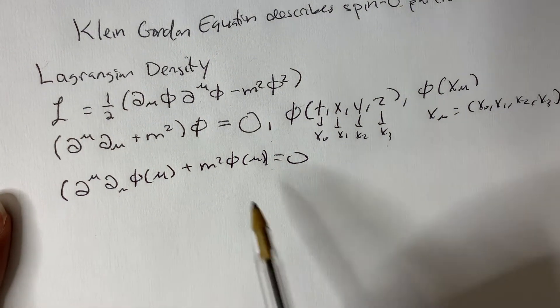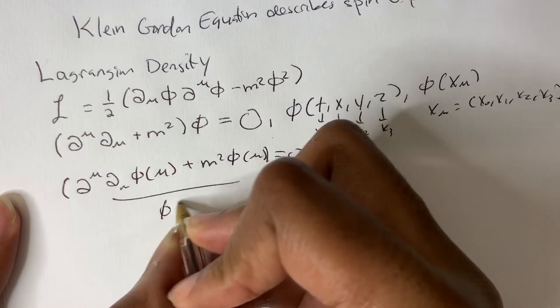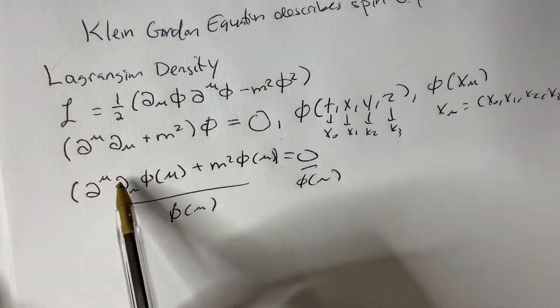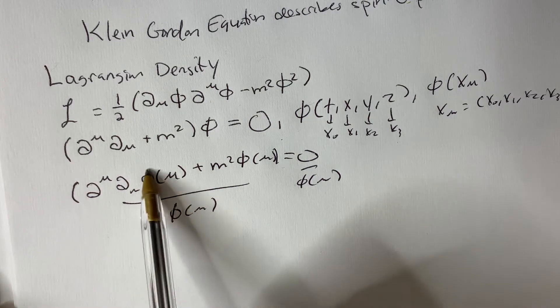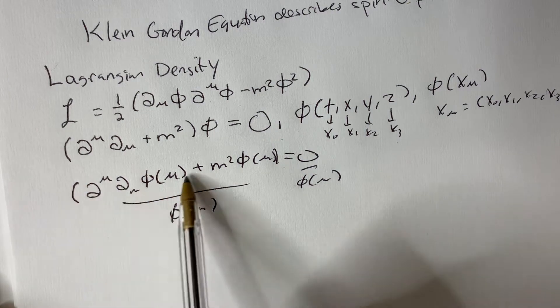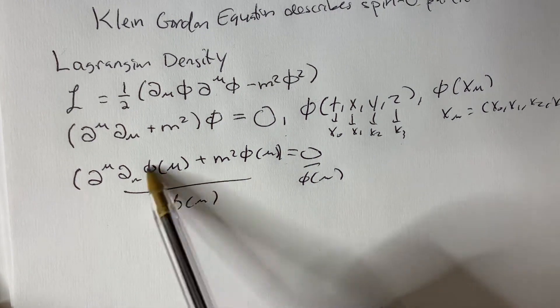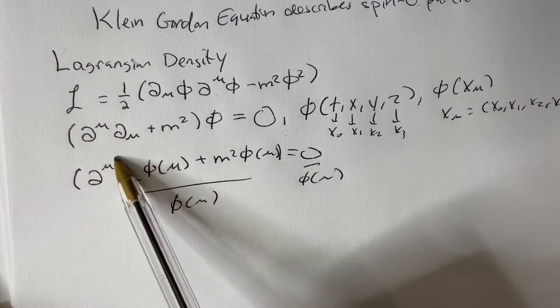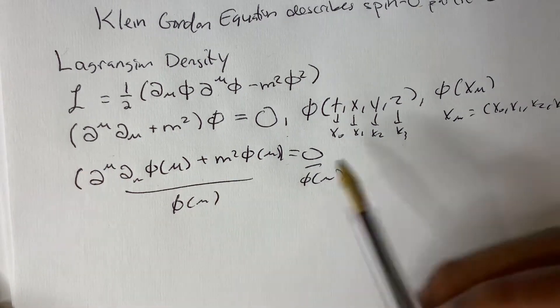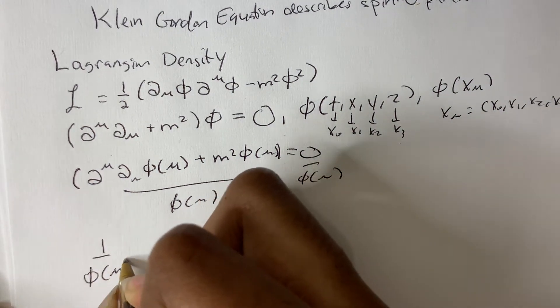Now, what we do is we divide both sides by phi of x mu. Now, I want to stress this. This phi of x mu is in the derivative. The derivative is evaluating it, okay? So when we divide both sides by phi of x mu, this won't cross-cancel out, because it's already being evaluated by the derivative.